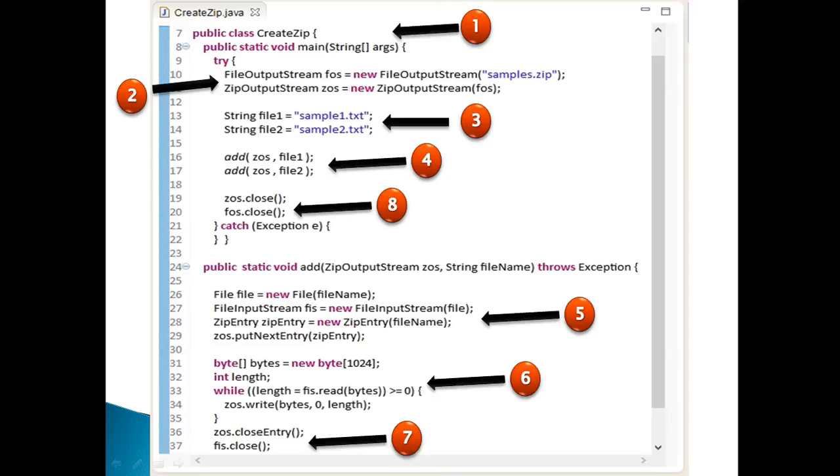Step 5. Create a static method by name add. It takes ZipOutputStream and file location with file name appended to it. Create a file from the file name string passed to it. Create a FileInputStream with the file created above. In order to create a zip file with multiple files, we have to create ZipEntry for each file.